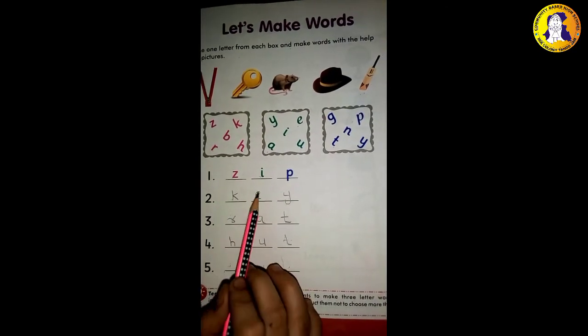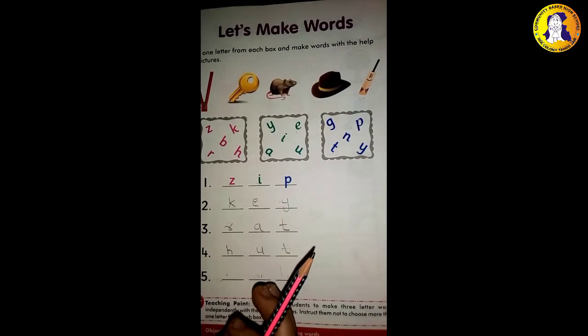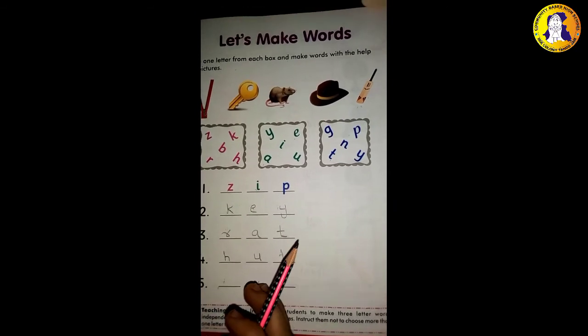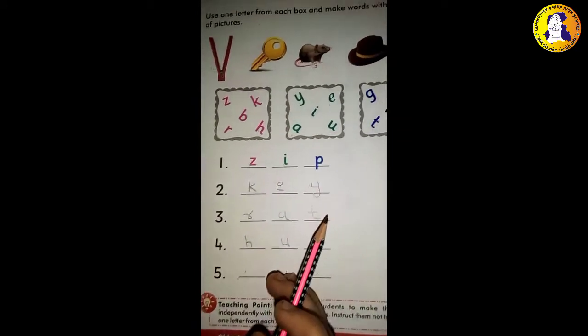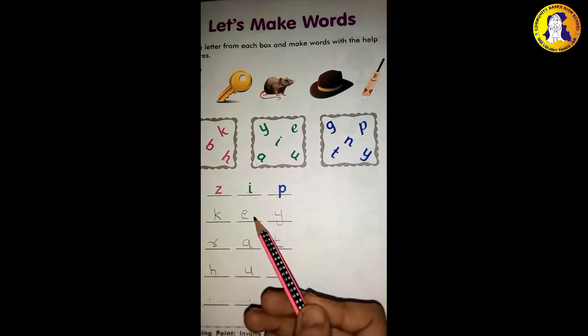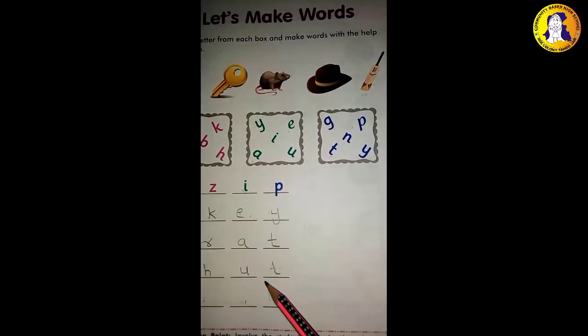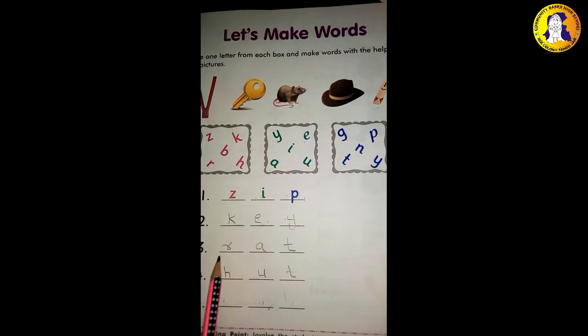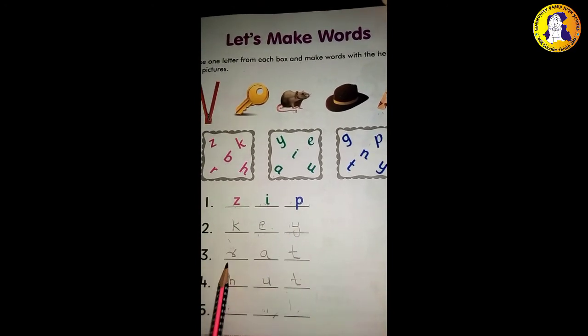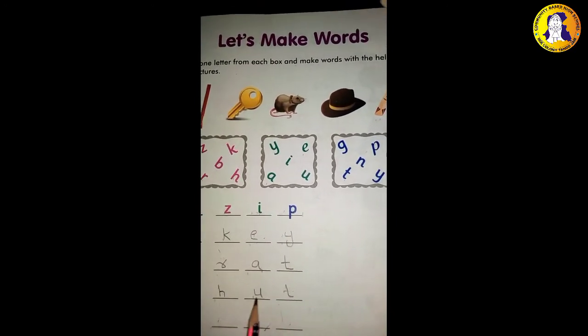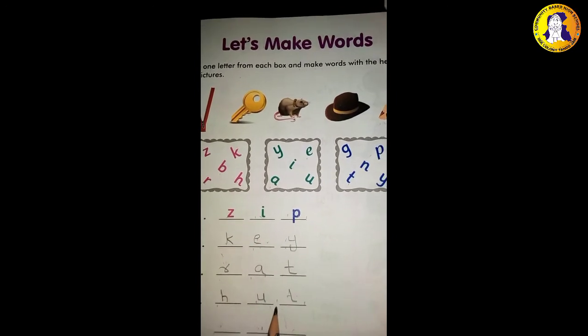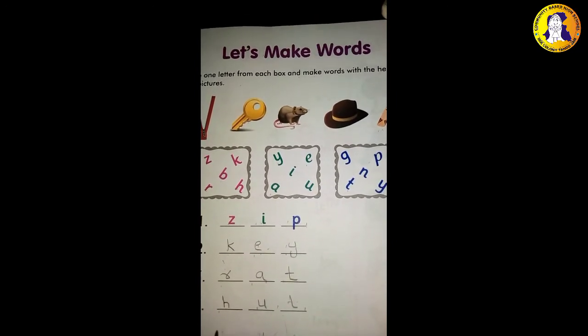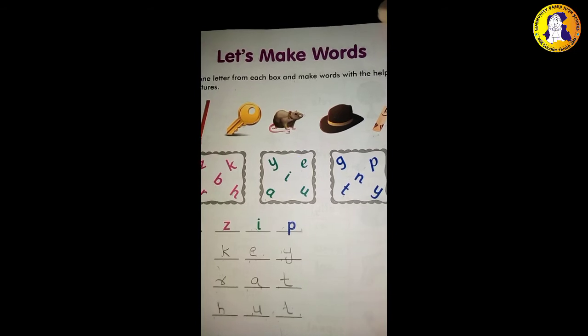After this, we will write one, two, three. So all letters are three letters. So we will write letters. Zip, key, rat, hut, bed. Zip, zip, key, zip, key. Zip, key, rat. R-A-T, rat. Zip, key, rat. H-U-T, hut. B-A-T, bat. Bed.